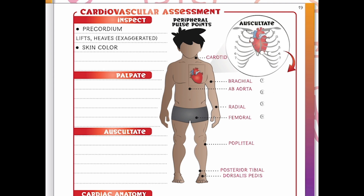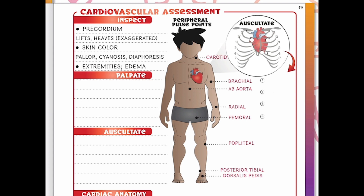We look at skin color beyond the precordium — is there any pallor, cyanosis, or diaphoresis indicating compromised circulation? Patients having a STEMI can appear dusky and gray due to circulation impairment. We also inspect our extremities for peripheral edema — swelling or fluid, especially in the lower legs — and check for JVD in the neck, which could indicate poor heart function. Then we move to palpation: feeling the pulse points we discussed, assessing rhythm and strength at those points and at the precordium, and noting any thrills or vibrations in the chest wall.